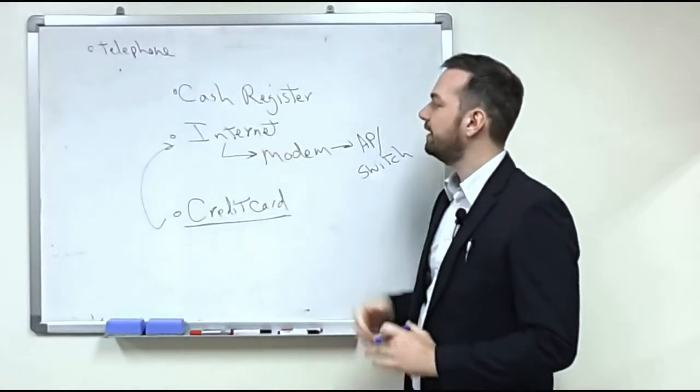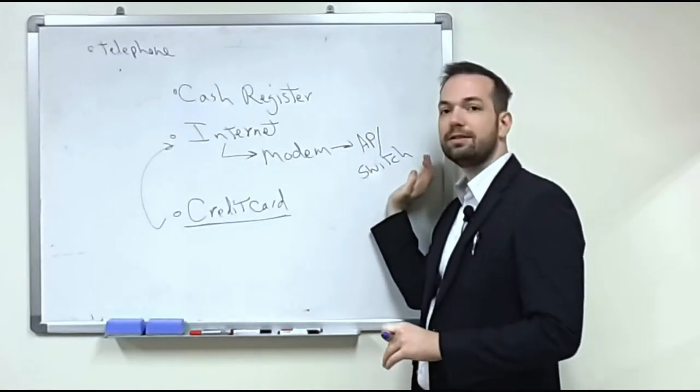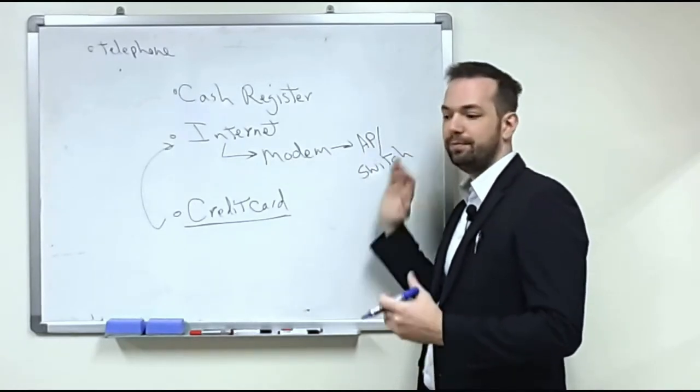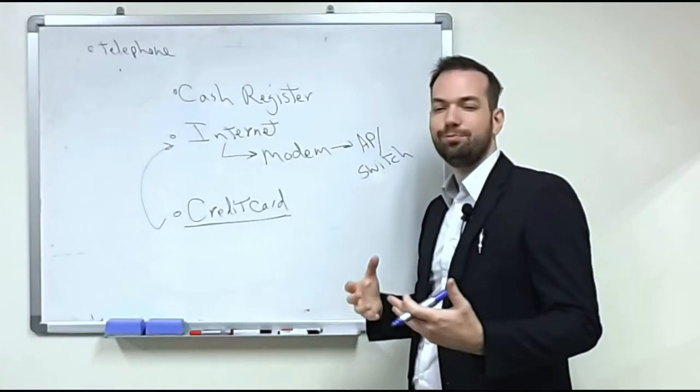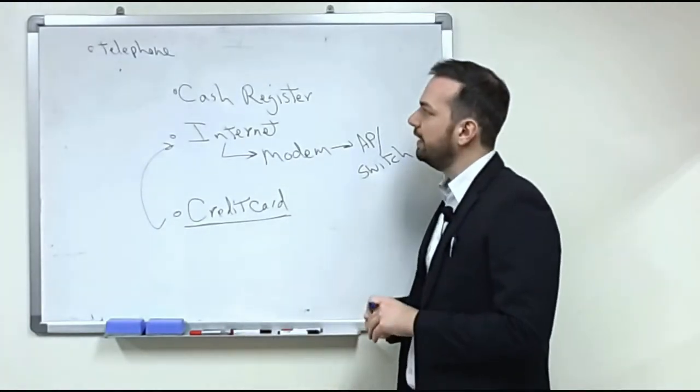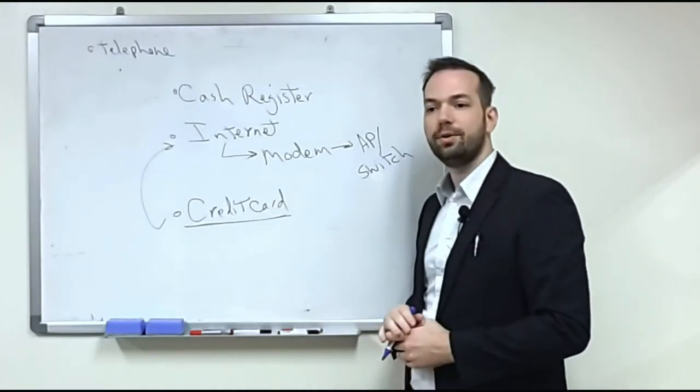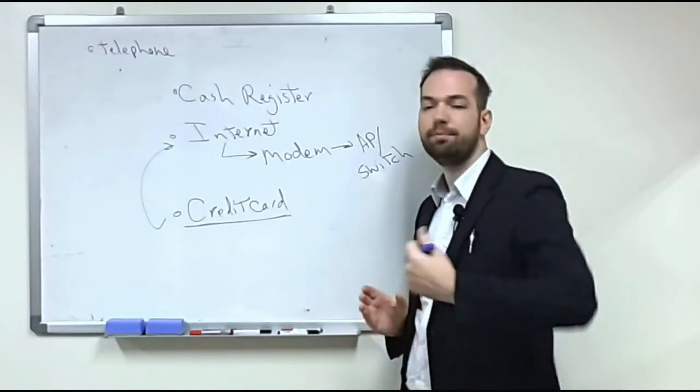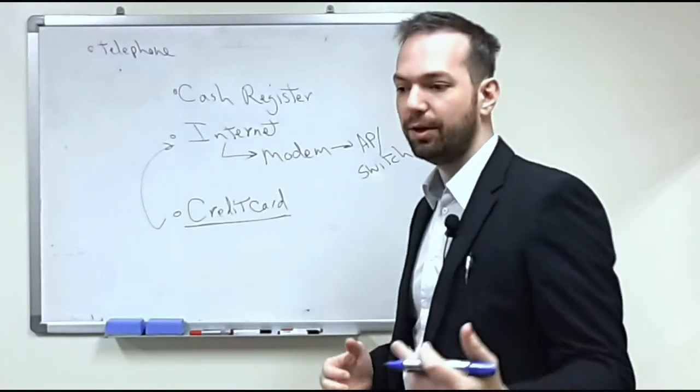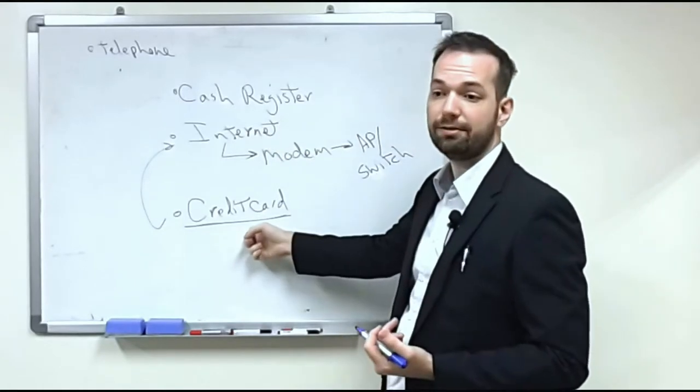And then internet, some sort of internet connection where we have a modem and then some way to connect to the internet, a hardware device that's providing either Wi-Fi or some sort of switching capability. So basically, this is what almost every business that you're going to go into has. So if you go down Myeongdong, every business you go into will have a cash register and internet connection and be able to process credit cards.